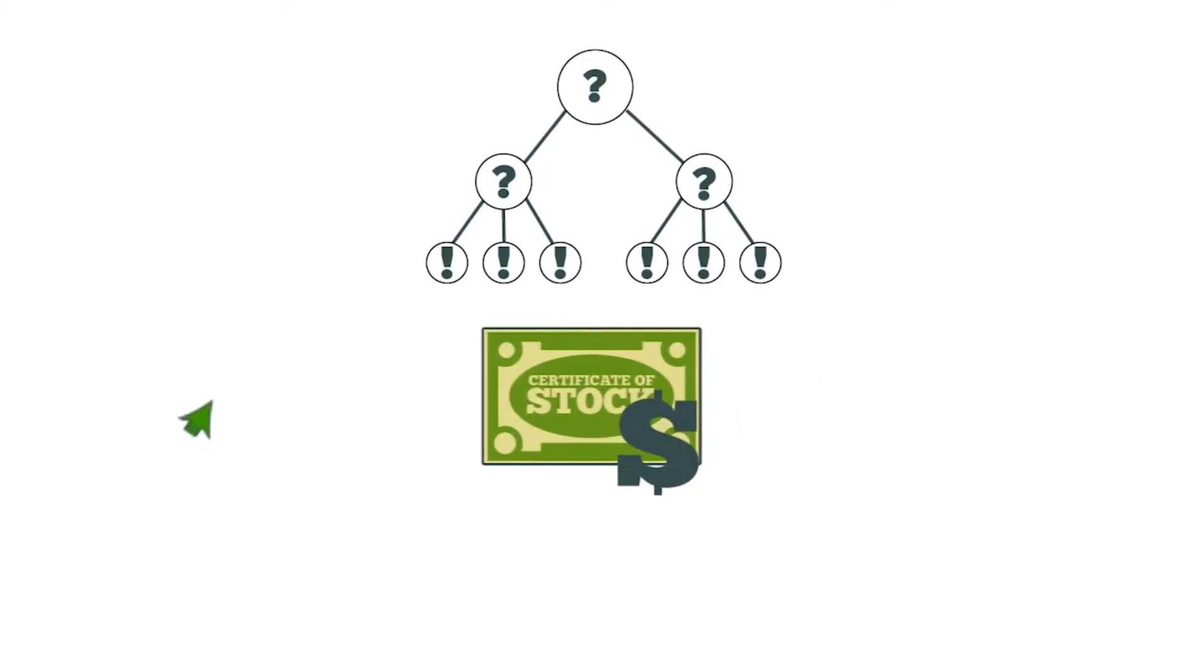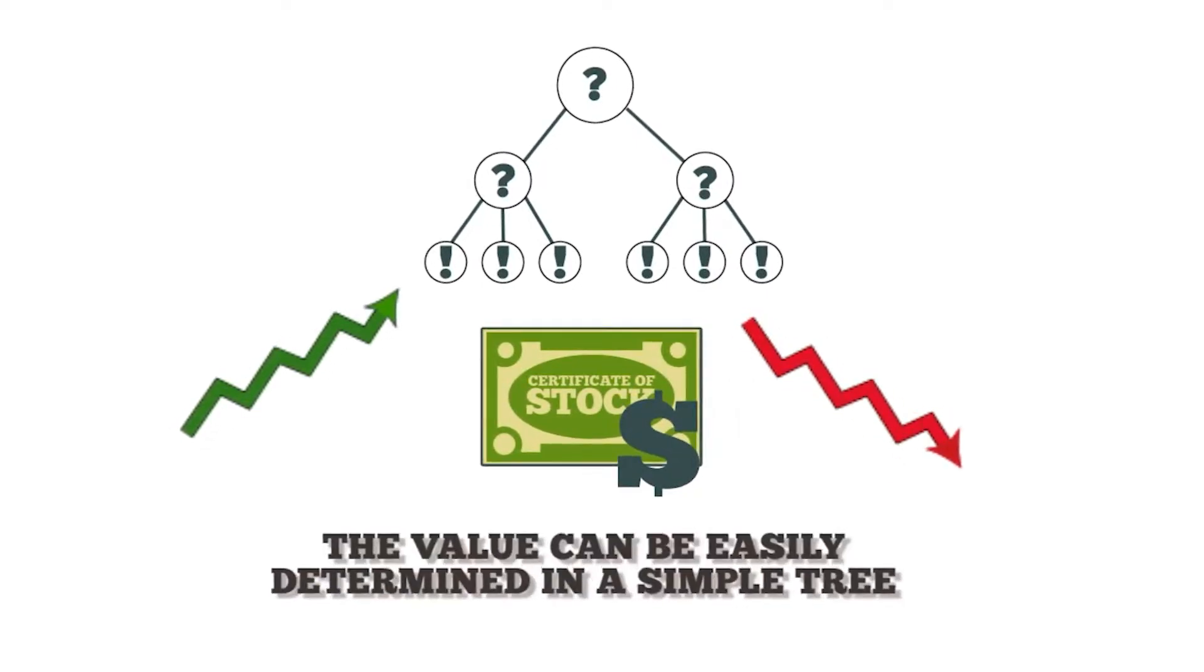One of the most basic applications of a decision tree is in pricing options. In its simplest form, the model assumes the value of the option's underlying stock will increase or decrease by set amounts, and the value can be easily determined in a simple tree.